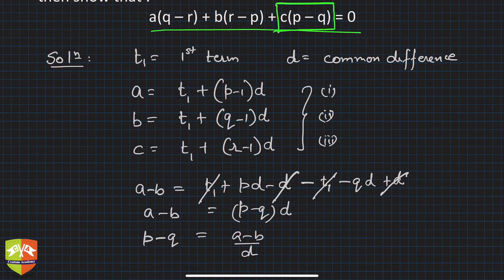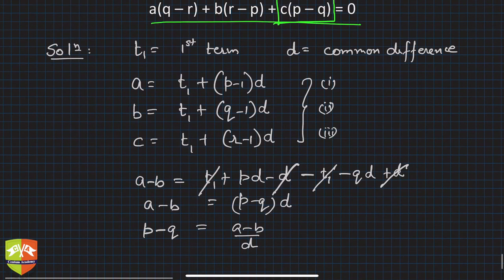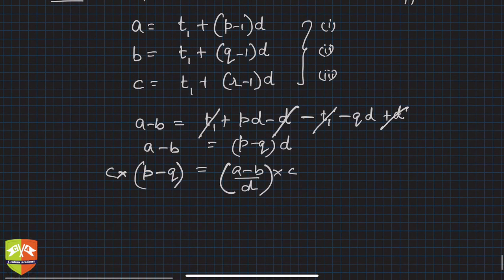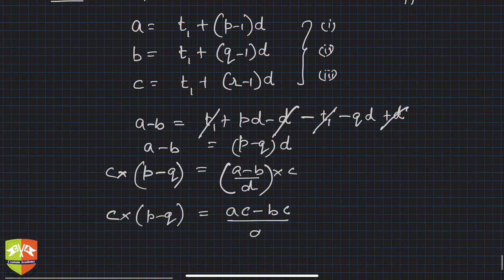Just multiply both sides by c, so I can do this. What do I get? I get c times (p-q) = (ac - bc)/d. This is equation 4.